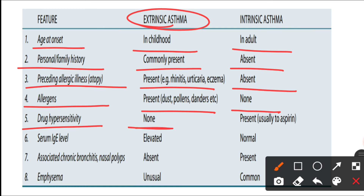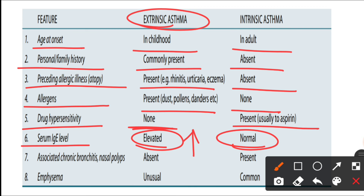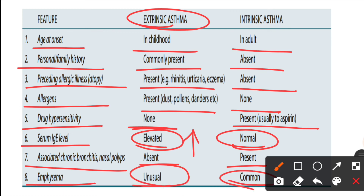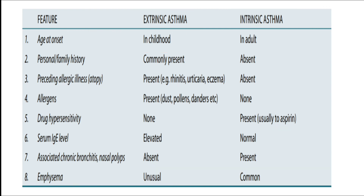Drug hypersensitivity is not observed in extrinsic asthma but can be present in intrinsic asthma. IgE level, a marker of allergy, is elevated in extrinsic asthma but normal in intrinsic asthma. Association with chronic bronchitis or nasal polyp is absent in extrinsic but present in intrinsic asthma. Emphysema is usually absent in extrinsic but can be present in intrinsic asthma. Examples of atopic asthma include allergic asthma, occupational asthma, and allergic bronchopulmonary aspergillosis, while intrinsic asthma examples include cold exposure, viral infection, drugs, and exercise-induced asthma.